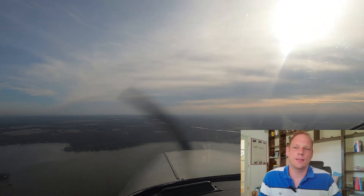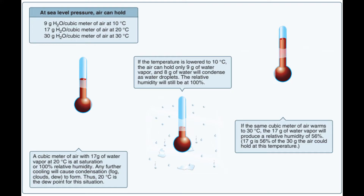The Pilot's Handbook of Aeronautical Knowledge has an interesting chart showing the impact of temperature and water vapor. On the top left we can see how much water vapor the air can hold at different temperatures. On the left is a case of 100% humidity at 20°C — any cooling will cause condensation to form. In the middle, the temperature is dropped to 10°C, and since the air cannot hold all the water it held at the higher temperature, some condenses as water droplets while humidity stays at 100%. On the right, the same air is warmed to 30°C, where it can hold much more water vapor, so relative humidity drops into the 50% range.